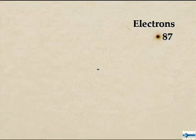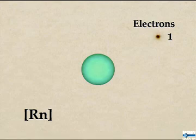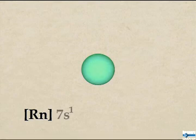Radon has 86 electrons distributed among six orbital shells. Francium has one more electron than radon. This single electron is found in the spherical 7s orbital shell.